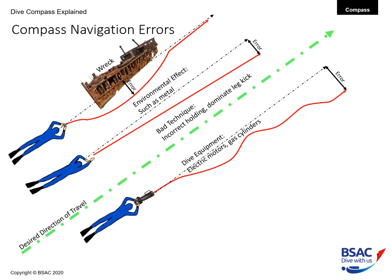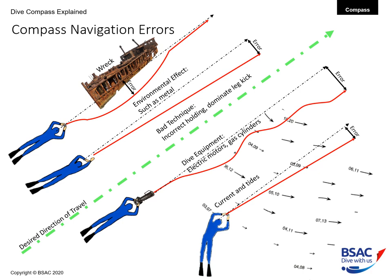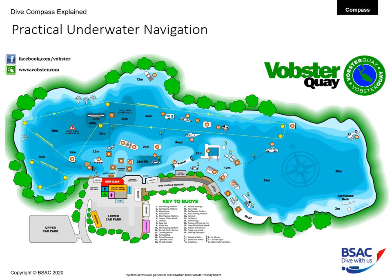The fourth error is carrying metal items — your dive equipment may include electric motors such as a diver propulsion vehicle, or multiple metal gas cylinders, and that may affect your compass reading. Lastly, we also have to take into account current and tides, which will also generate error in compass navigation. If you've not used a compass underwater, I would recommend you first try a dry run on land.